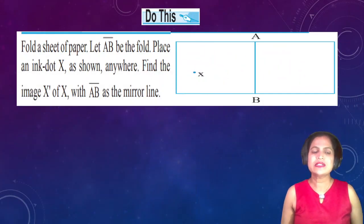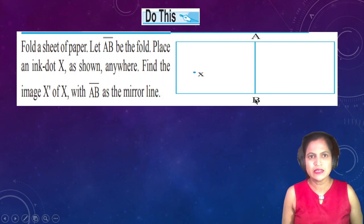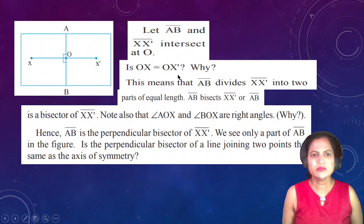Do this. Fold a sheet of paper. Let AB be this line. When you fold, you get a crease there. At that crease, draw a line and place an ink dot X. Place an ink dot X as shown anywhere. Find the image X' with AB as the mirror line. You find the exact mirror image of this. How? I will show you. Then you find the X' point like this.